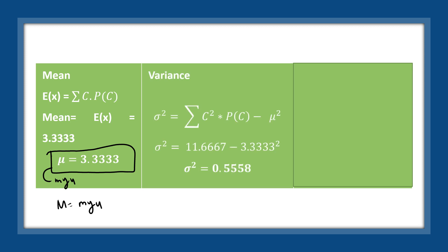To find the variance, use the formula: sigma squared (σ²) equals the summation of C squared times P(C) minus mu squared. For C squared, multiply each value of C by itself: 5² = 25, 4² = 16, 3² = 9, 2² = 4. For C squared times P(C): 25 × 6/126 = 150/126, 16 × 45/126 = 720/126, 9 × 60/126 = 540/126, 4 × 15/126 = 60/126. Adding these: 150 + 720 + 540 + 60 = 1470/126 = 11.6667. Therefore, sigma squared equals 11.6667 minus (3.3333)², which gives a variance of 0.5558.